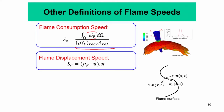V_f is the velocity of the flame surface in the laboratory reference frame, and u is the velocity of the local fluid. The resultant velocity V_f minus u, projected along the normal vector n, gives the displacement speed S_d. So: S_d · n = V_f − u. From this, if you can track the flame surface, you can extract the displacement flame speed.